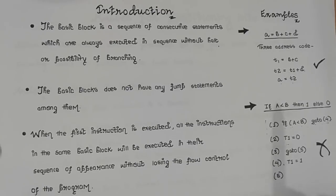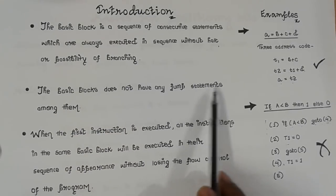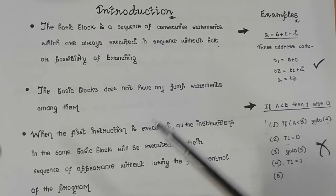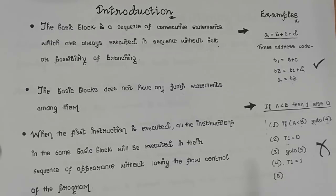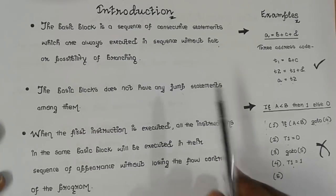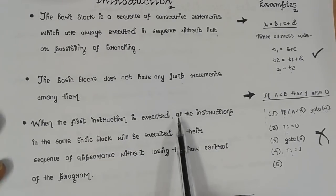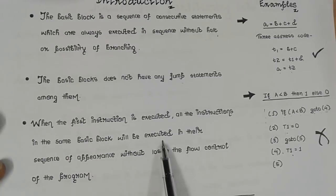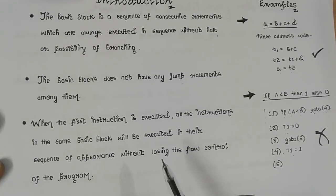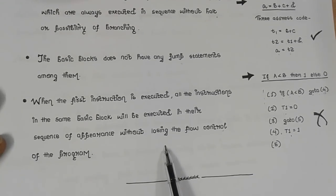The basic block does not have any jump statements among them, because if there are jump statements, the normal sequential execution flow will not hold. And when the first instruction is executed, all the instructions in the same basic block will be executed in their sequence of appearance without losing the flow control of the program.